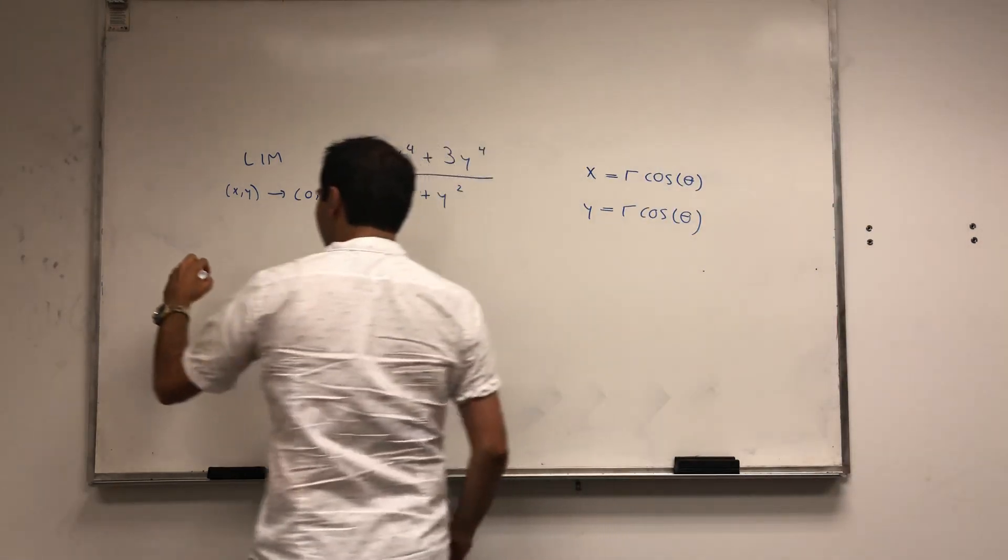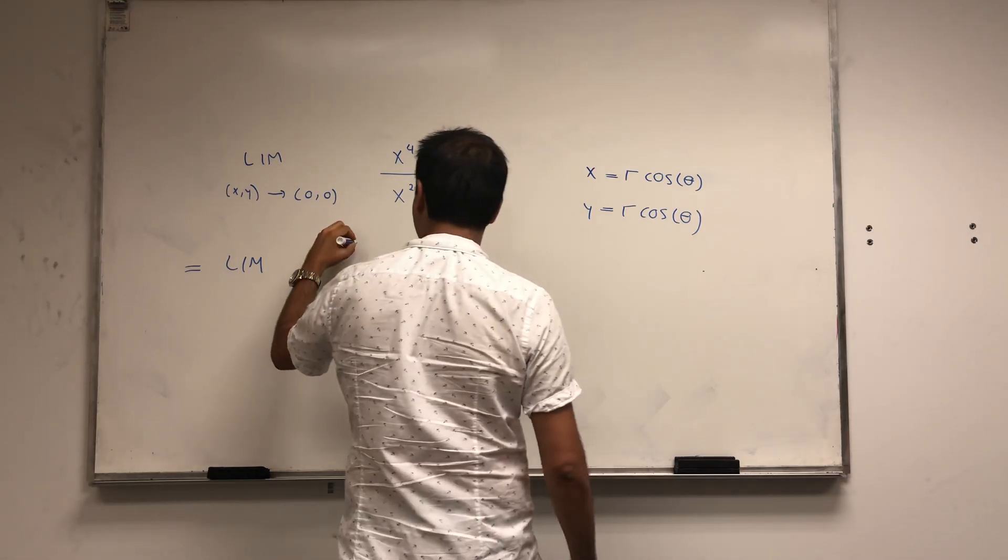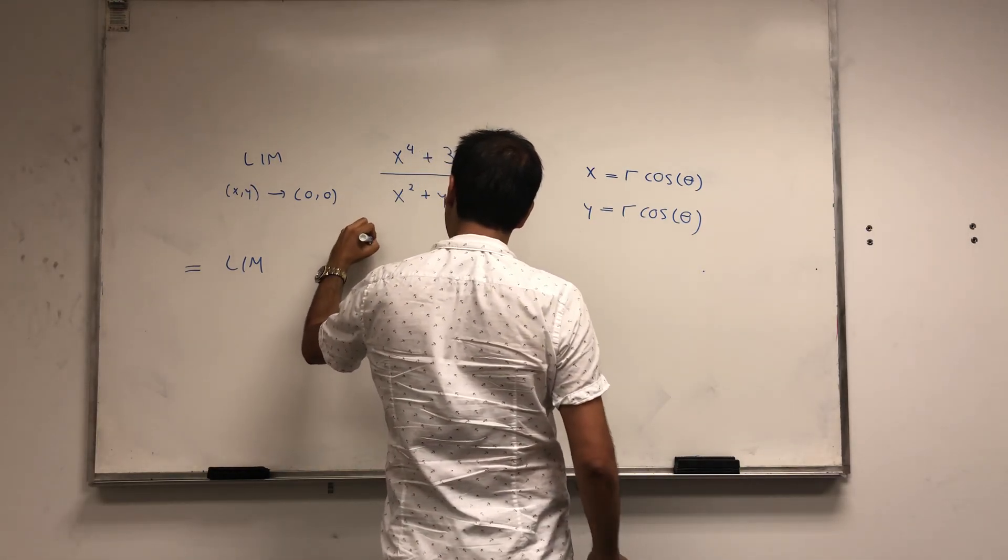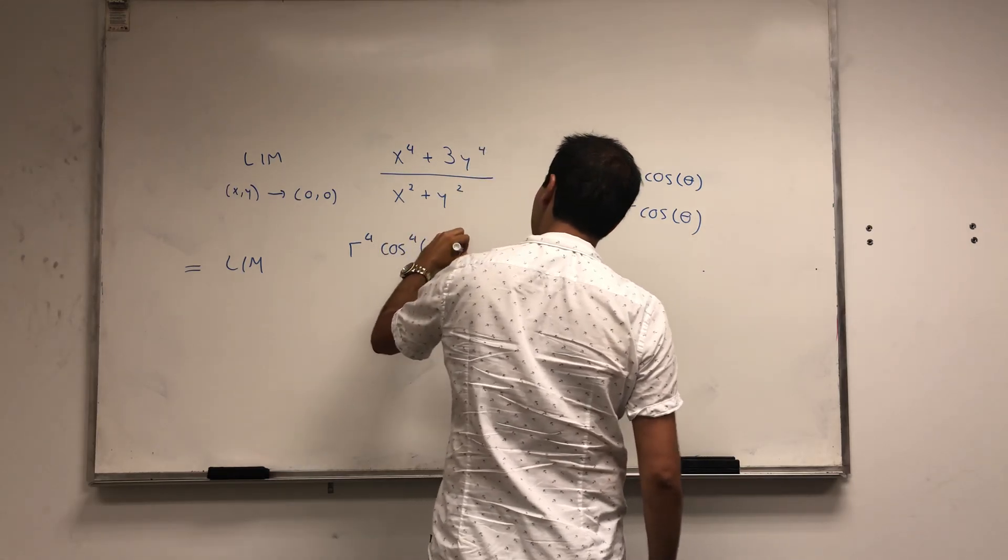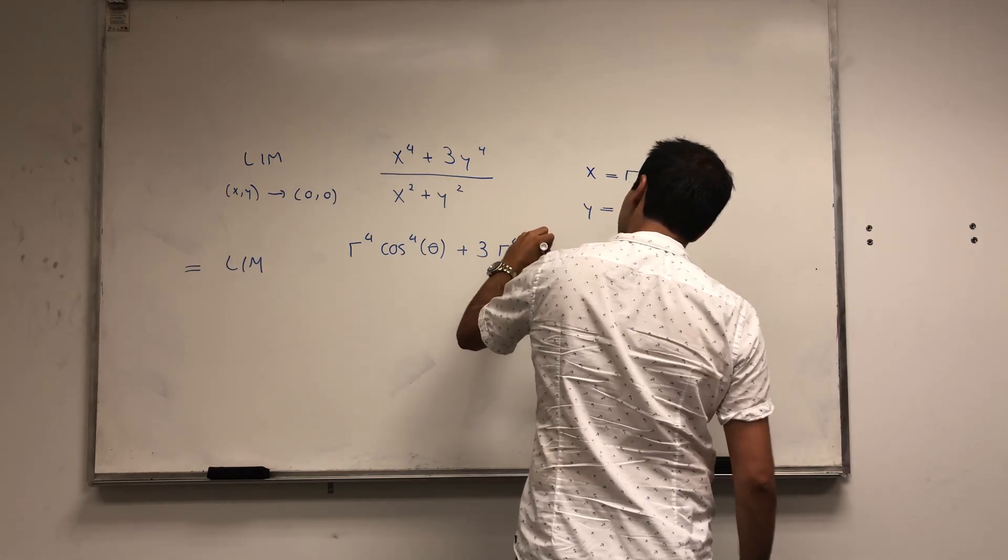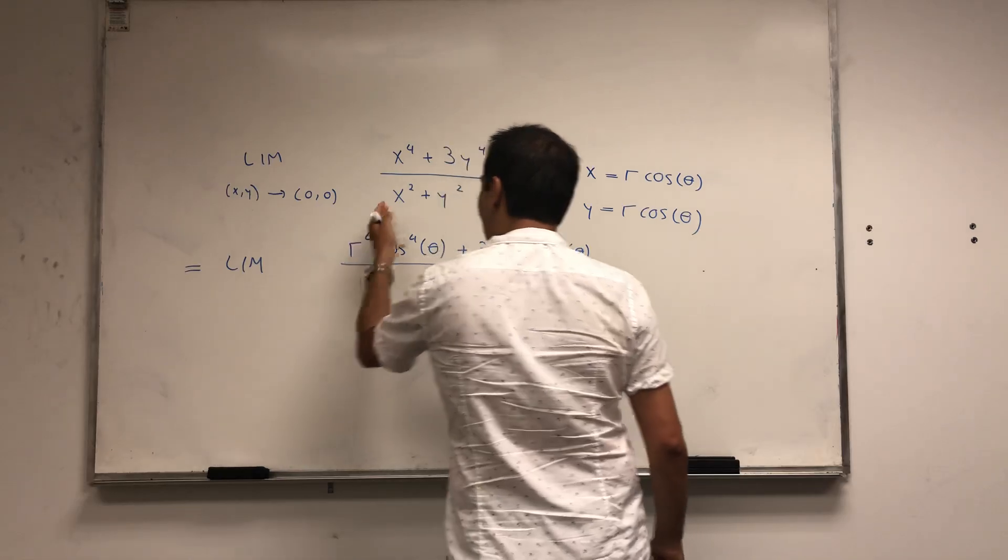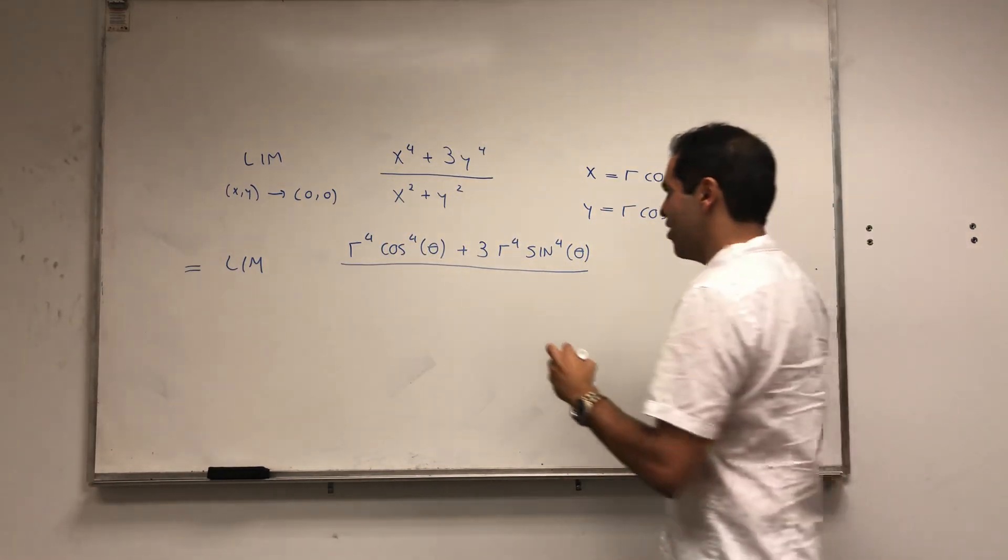So this becomes limit of something, and I'll elaborate on this in a second. So x to the fourth is r to the fourth cosine to the fourth theta, plus 3 r to the fourth sine to the fourth theta, over x squared plus y squared. If you plug that in, you get r squared.